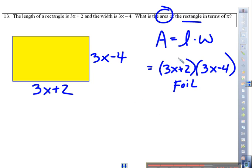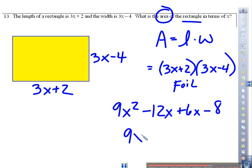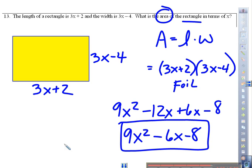So we're going to use FOIL. Front two terms gives me 9x squared. Outside two terms gives me negative 12x. Inside two terms gives me 6x. Last two terms gives me negative 8. Combine like terms and you get 9x squared minus 6x minus 8. They didn't ask us to solve for x. They just wanted an expression for the area in terms of x.